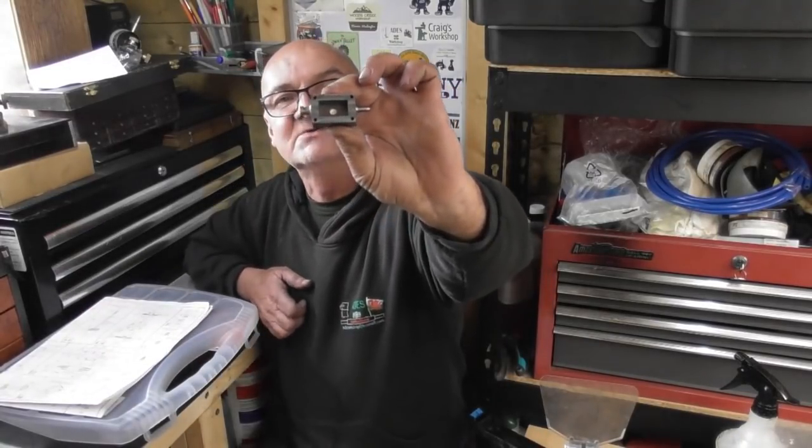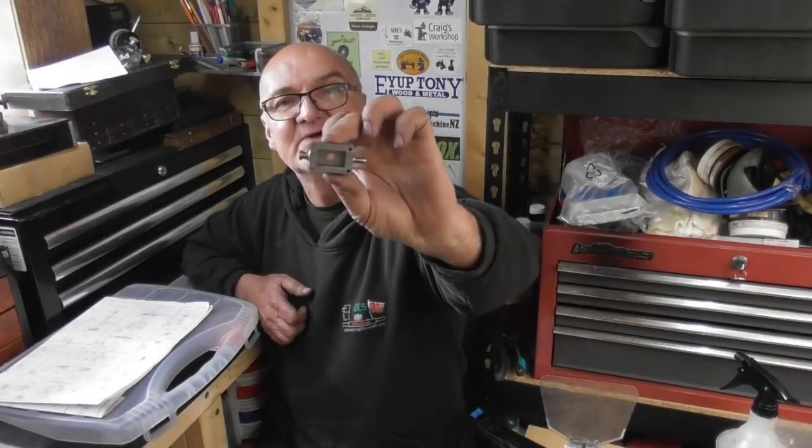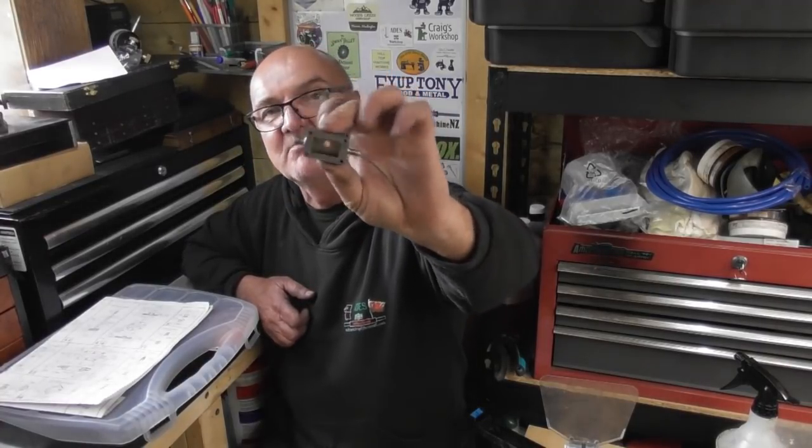Well there we are guys, that's the steam chest and cover completed. Every detail done on those. I do need to make the four holes that go into the cylinder. I haven't put those four holes in. I'll probably put those in off camera, but no problem. It's just four tapped holes for this to bolt on the side. So that's that for this part.